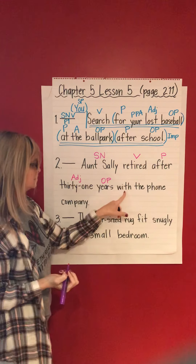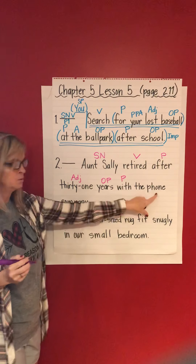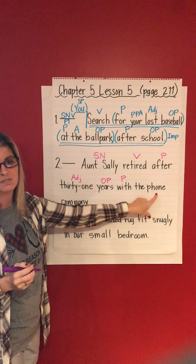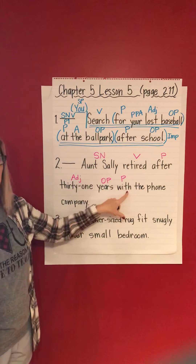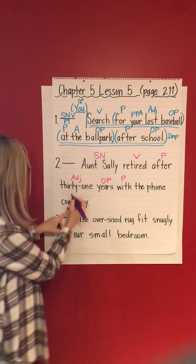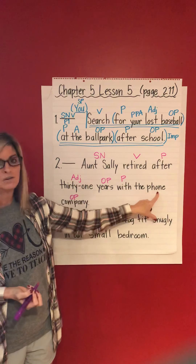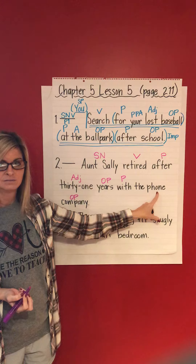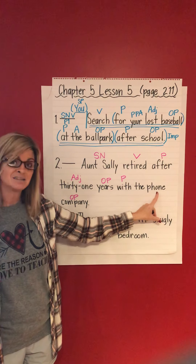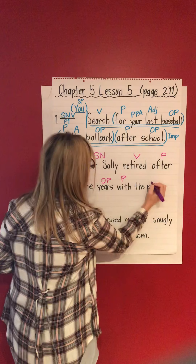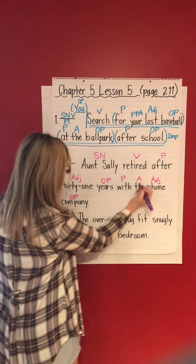'With' — preposition. With what? Not phone — she didn't retire with the phone. She retired with what? Company — object of the preposition. What does 'phone' answer? It would answer 'which company' or 'what kind of company,' so 'phone' would be an adjective. 'The' — article adjective.